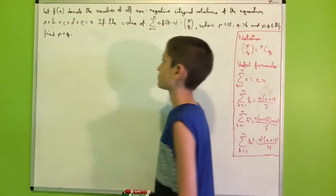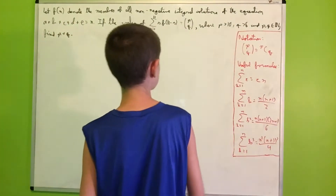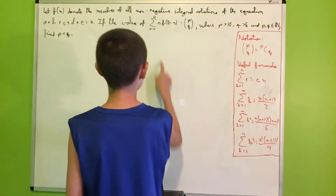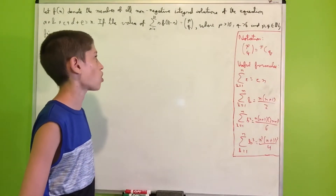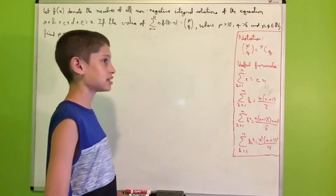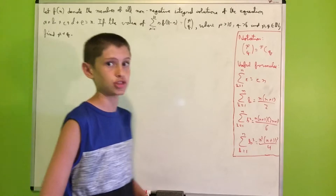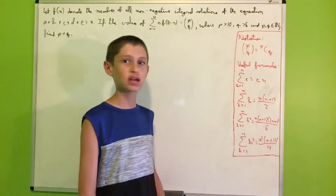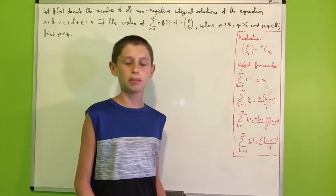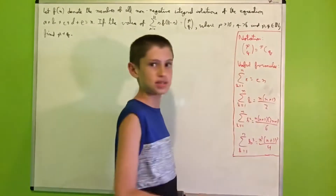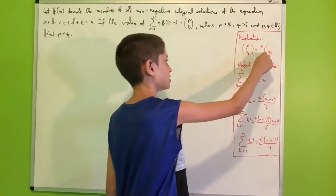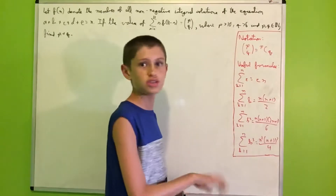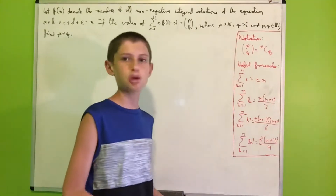Let's see what our problem states. Let f(n) denote the number of all non-negative integral solutions of the equation a + b + c + d + e = n. If the value of the sum as r goes from 1 to 11 of r times f(11 − r) is equal to p choose q, where p > 10, q > 6, and p and q are elements of the natural numbers, we want to find what p + q actually is. Before we solve the problem, I'd like to go over some notation — namely for the binomial coefficient, because some people use the notation with a little p, then a C, then a q. I'll be using the standard notation since it's the one I'm most familiar with, but they both represent the binomial coefficient.